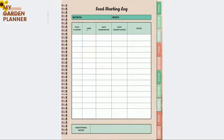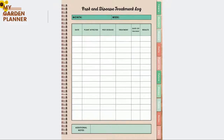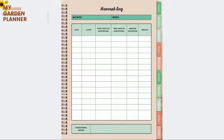You also have a seed starting log — very important — especially if you plant a seed and want to record when it germinates. The pest and disease treatment log is also very important for recording all your planned and effective treatments. The harvest log lets you write down your harvests as well.